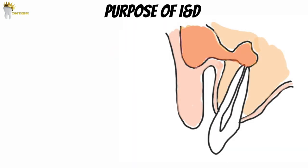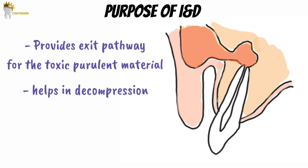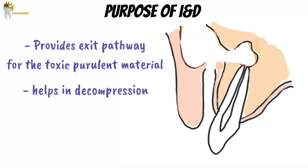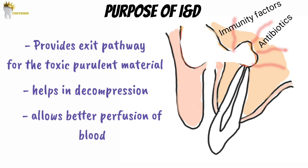When there is an acute dento-alveolar infection or a fascial space abscess, incision and drainage provides a way for the toxic purulent material to get out. This relieves the pressure in the tissues. When there is pus, a lot of pressure builds up inside the tissues and this creates pressure necrosis. When the pus is let out, it decompresses the tissues and allows better perfusion of blood to the area. In this way, the antibiotics given to the patient and other immunity factors in the blood can actually reach the tissues. This is why antibiotics alone are not effective without evacuation of the pus.